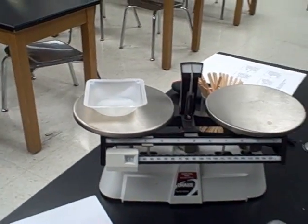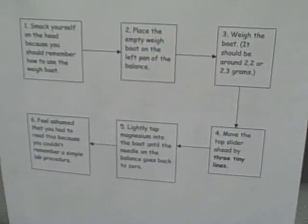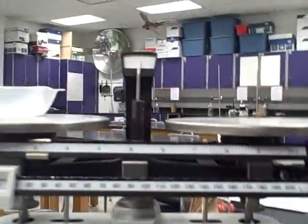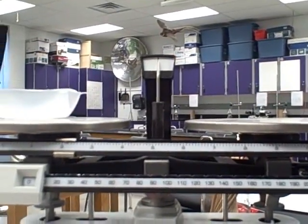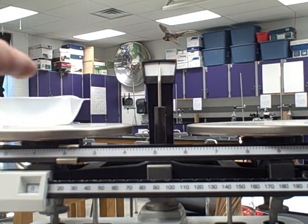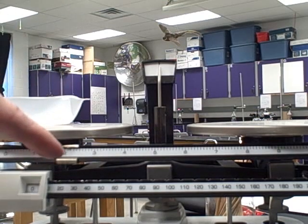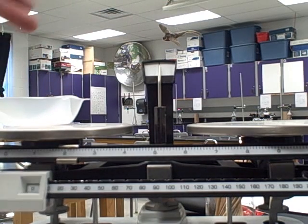In the first step, you need to measure up 0.3 grams of magnesium metal — that's three of the tiny lines on the scale. If you can't remember this, refer to the instructions on the cork strip. First, balance your scale with the weigh boat on the left-hand side. In this case it weighs 2.1 grams. We need 3 tenths of a gram — not 3 grams, 3 tenths.